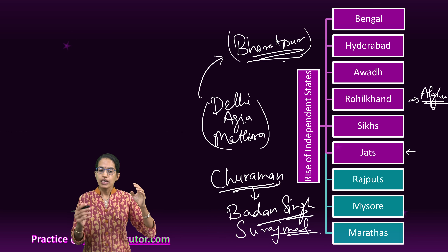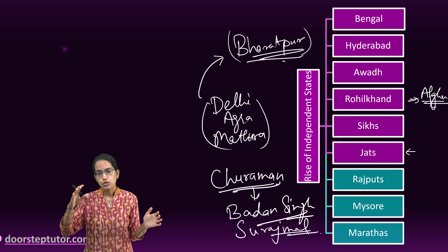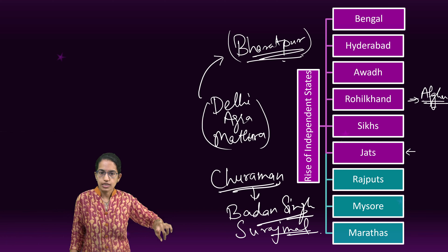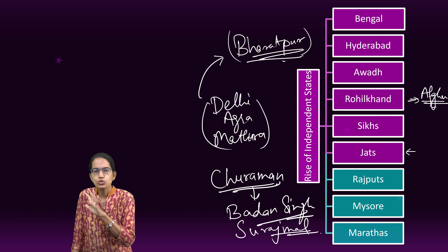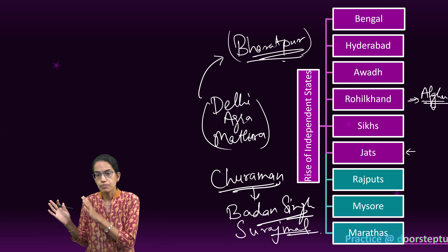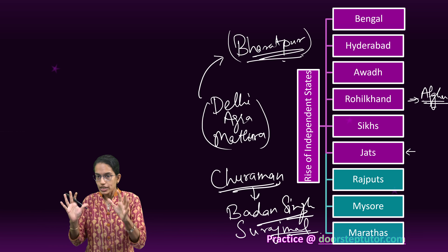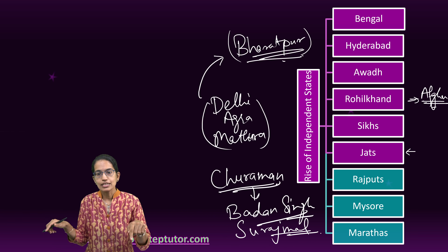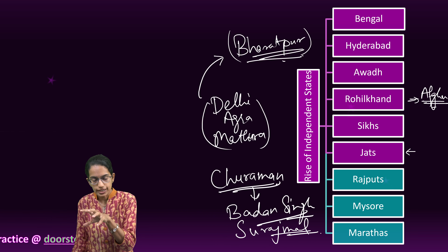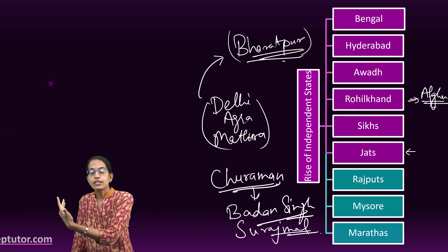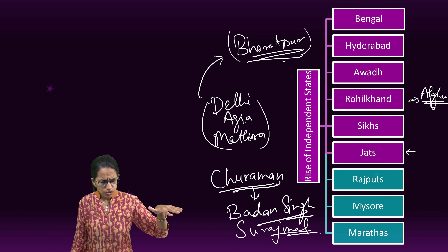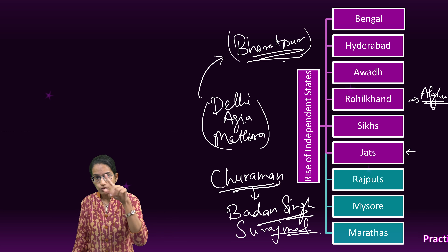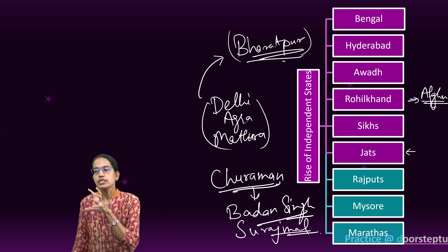The area extended from Delhi to Agra to Mathura, Hathras, Rewari and Gurgaon — close to the present-day NCR and its extensions. The area which is the national capital region of Delhi and its extension to Rewari, Mathura and Hathras was under the Jhat independent state. The capital of the Jhats was Bharatpur.